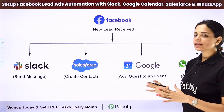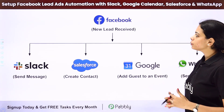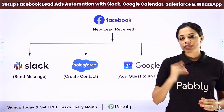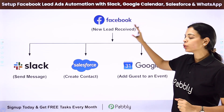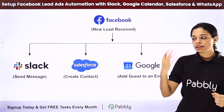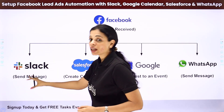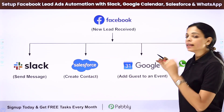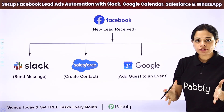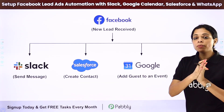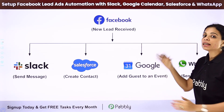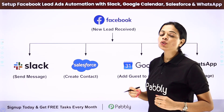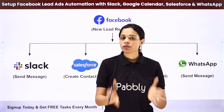In this video we are going to see how to set up Facebook lead ads automation with Slack, Google Calendar, Salesforce and WhatsApp. This is a complete integration where every time you receive a new lead through Facebook lead ads, the details would automatically be shared with your team on Slack, added as a new contact in Salesforce, added as a guest in a calendar event, and a WhatsApp message will be sent about the event and successful registration.